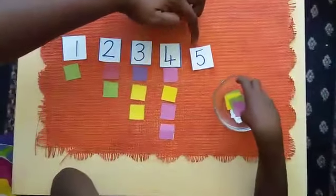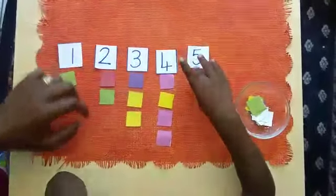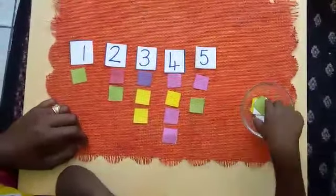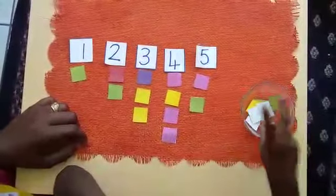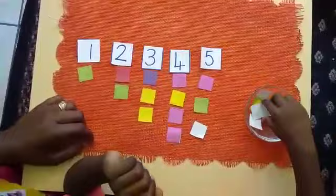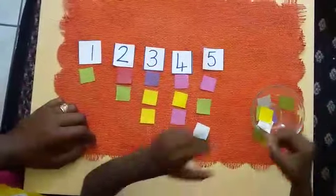What is this one? 5. So we're going to put 5 counters there. 2, 3, 4, 5.